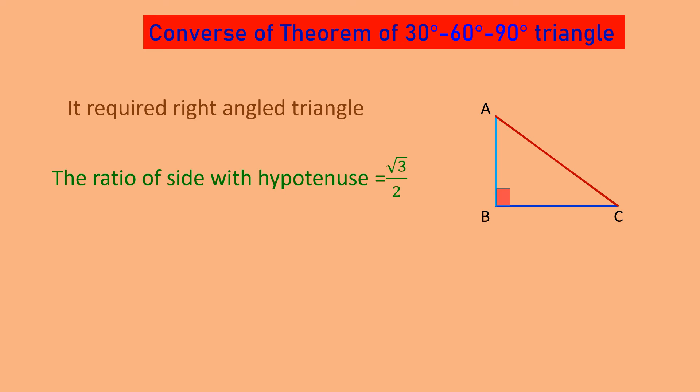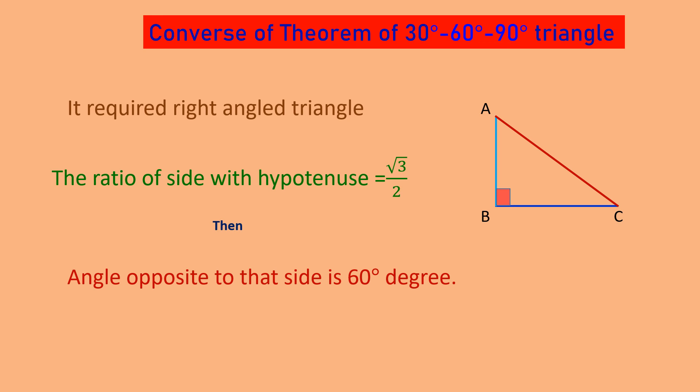If BC divided by AC equals root 3 upon 2, then the angle opposite to side BC — that is angle A — will be 60 degrees. And since it is a right angle triangle, the sum of the two acute angles should be 90 degrees, so angle C will become 30 degrees. By the converse of the 30-60-90 degree theorem, we get angle A is 60 degrees and angle C is 30 degrees. I hope it is clear.